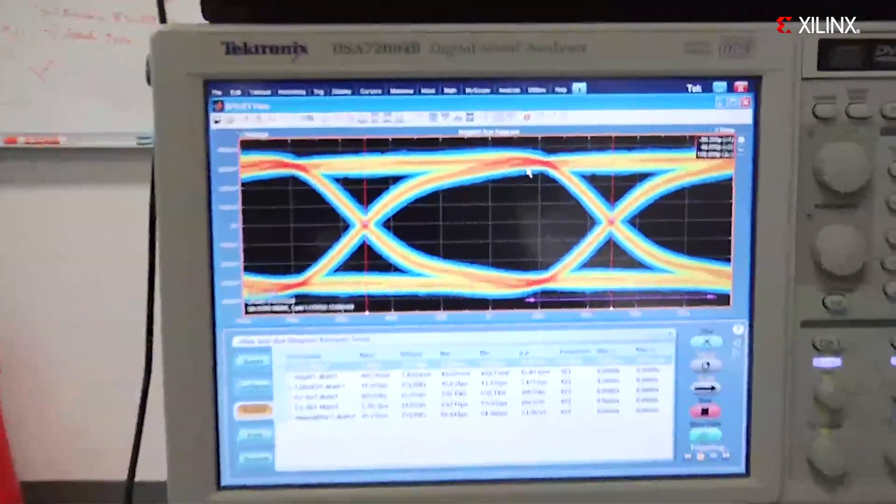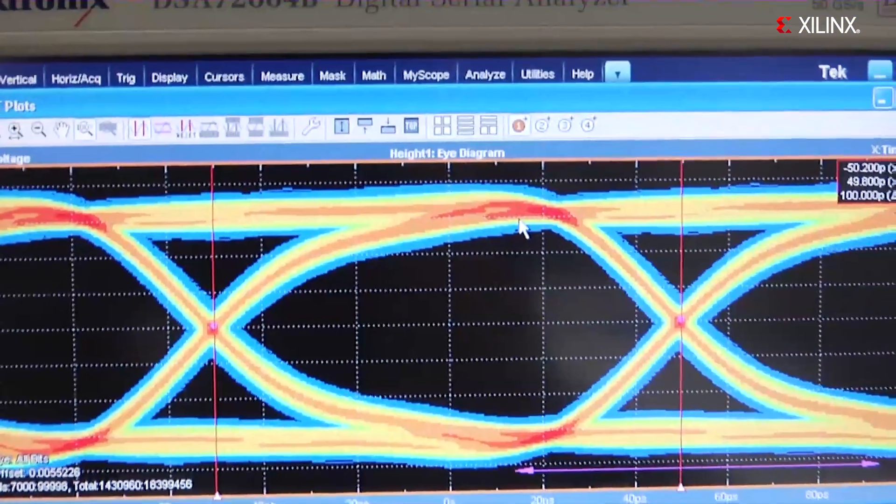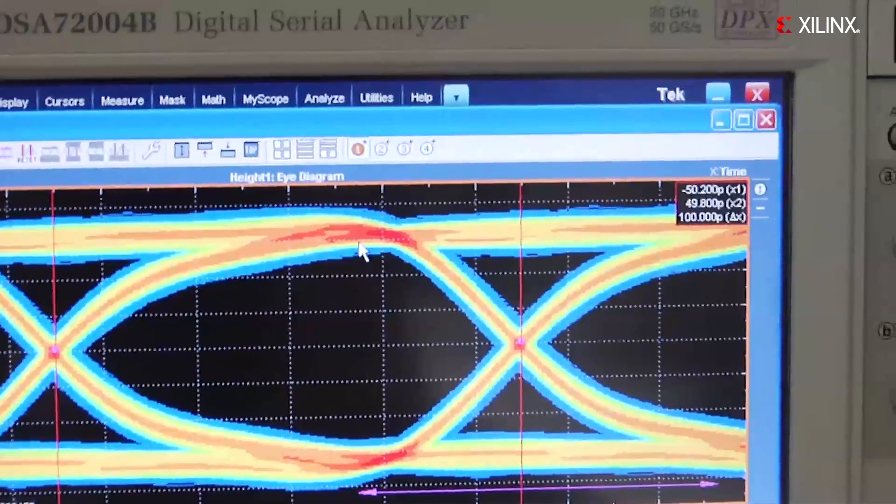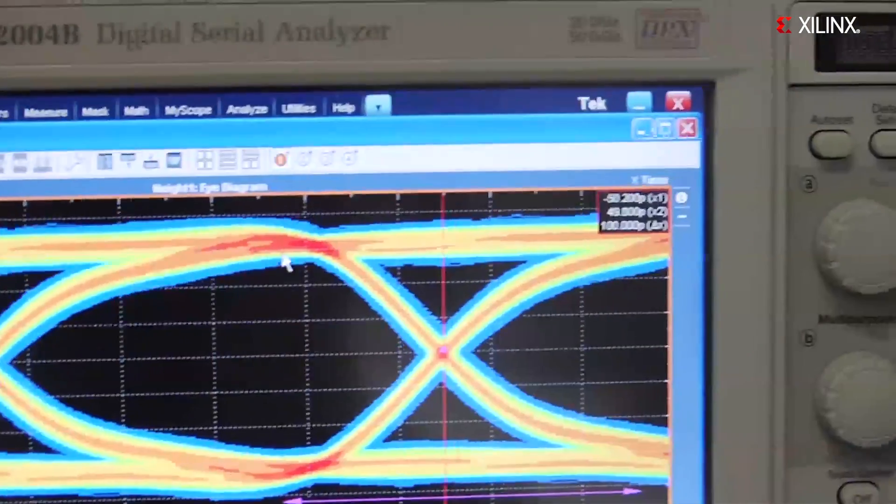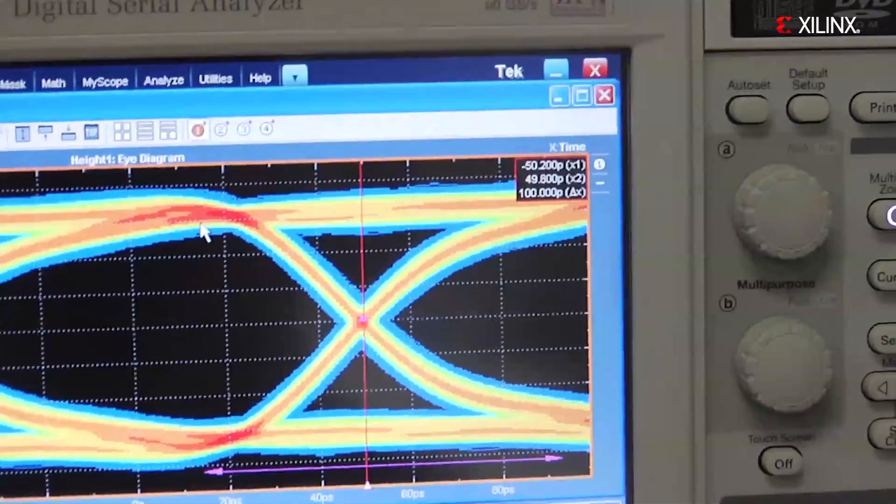Perhaps most impressively, we've been able to measure the performance of the high-speed serial transceivers. Here we're running the transceiver at 10 gigabits per second, as shown on the waveform. It's a full PRBS test pattern, and we're measuring it on the Tektronix scope.